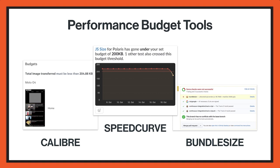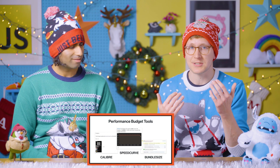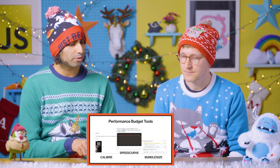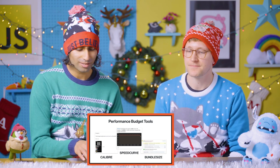Another thing we've seen is a spread of tools for performance budgets and performance budget tracking. Bundle size is obviously super popular. We've been using it in Workbox — a similar incantation of it — and it's immensely helpful for saying this PR has grown the size of this by X amount, or this PR is purely to reduce file size, and you can actually see it in the PR. Really great for holding your team accountable.